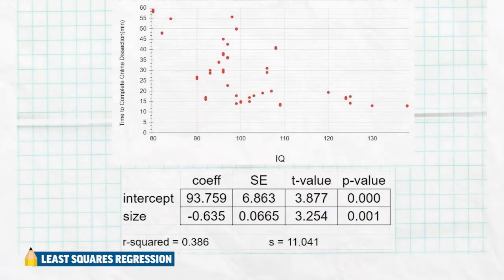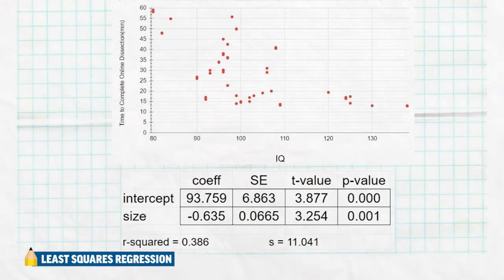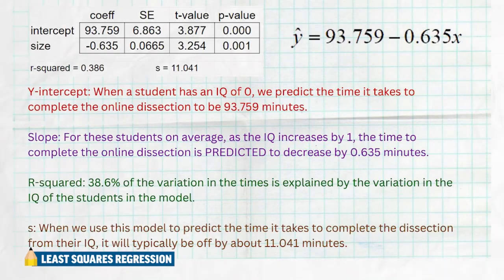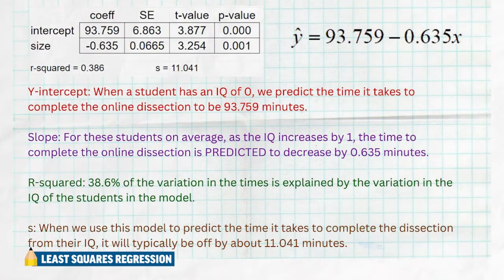Here's another example — scatter plot of IQ scores versus the time it takes to complete an online dissection in minutes, along with a computer regression analysis. Typical questions: what is the intercept and interpret what it means. The intercept is 93.759 — if someone has an IQ of zero, we predict it would take 93 minutes to complete the online dissection. That doesn't make a lot of sense since an IQ of zero is essentially impossible, but it's probably because of extrapolation. The y-intercept doesn't have a lot of meaning in context, which typically happens.